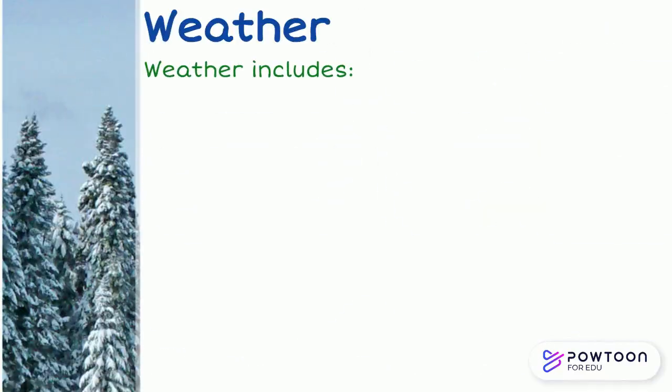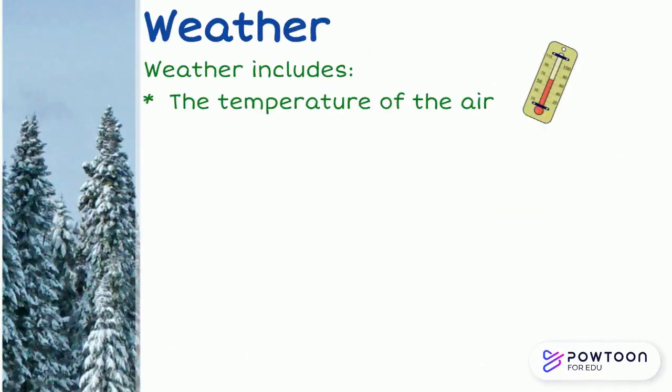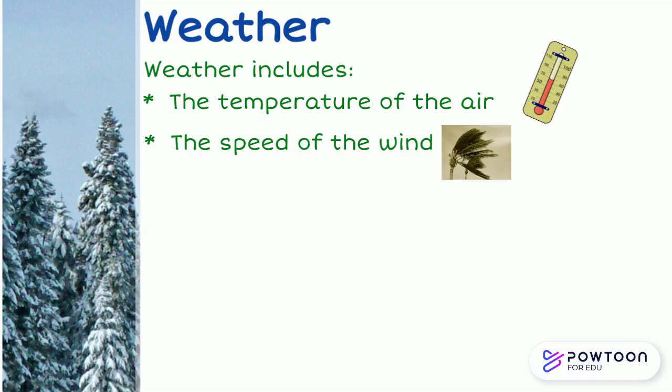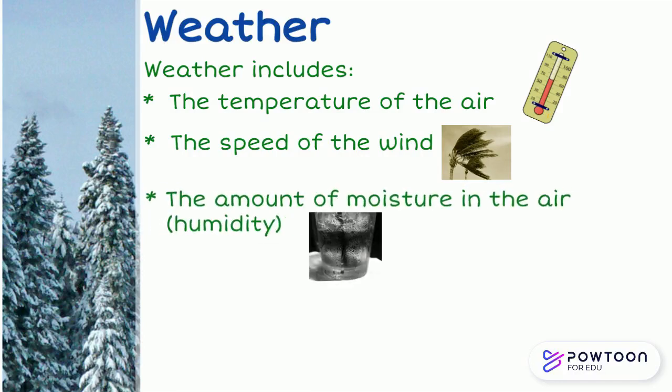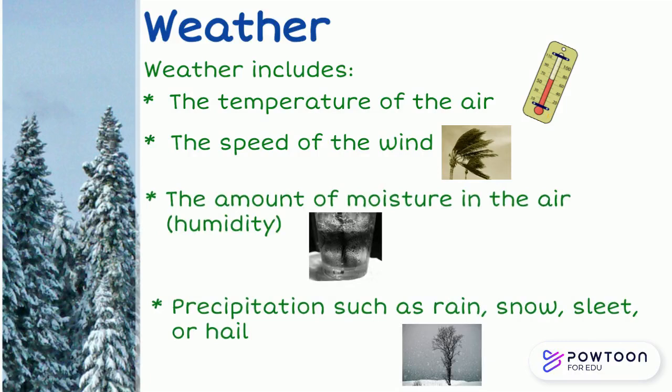Weather includes the temperature of the air, the speed of the wind, the amount of moisture in the air, humidity, and precipitation such as rain, snow, sleet, or hail.